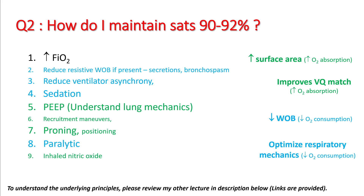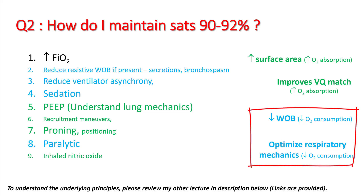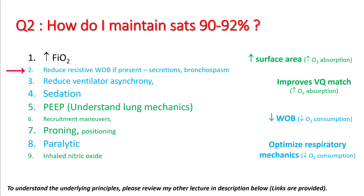Since these patients have no reserves, you want to use oxygen for the most important organs and therefore you want to decrease oxygen consumption by tissues like muscles. So you want to decrease your work of breathing and optimize respiratory mechanics. This can be done by reducing resistive work of breathing, reducing ventilator-patient asynchrony, sedation, and paralytics.